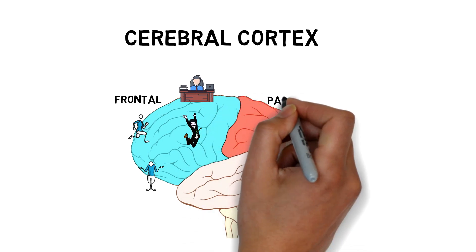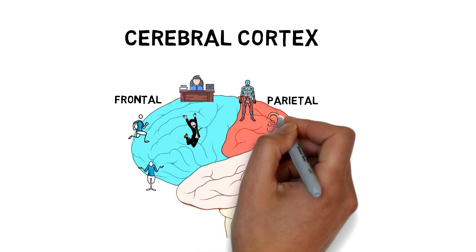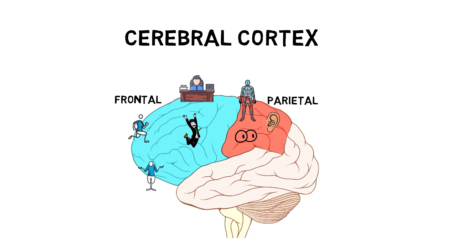If we move back to the parietal lobe — what does that do? It's mainly involved in sensation and how we interact with the world around us. Inside this area we have the somatosensory cortex. When you map this area along the cerebral cortex, you can see it devotes huge amounts of brain surface area to parts of the body like your fingers, your tongue, your lips — meaning we have more neurons and a lot more sensory information coming in from the more sensitive parts of our body. If you damage this part of the brain, you might end up ignoring part of your body or even one side of the world around you.